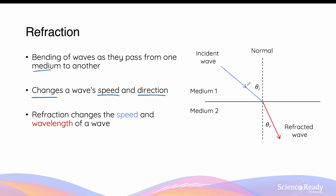Using the ray model of light, when we have a wave that travels from medium one to medium two, this is referred to as the incident wave or the incident ray. The angle that the incident ray makes with the normal drawn from the interface between the two media is known as the angle of incidence, or the incident angle.